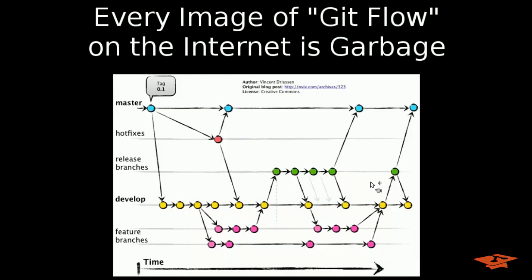You may have heard of git flow before. I have searched the internet for a good image that describes how this works and I cannot find one. There are a lot of them out there that look like this, which I would consider not helpful at all, because it shows branches in an incorrect way. You can see it's showing the master branch going this way, hot fixes here, release branches this way, the develop branch and feature branches — this drawing is super confusing to people that don't understand branches, because branches don't work this way at all. So what I'm going to try to do here in the next few minutes is explain git flow in a visualization that I think is a lot more helpful.